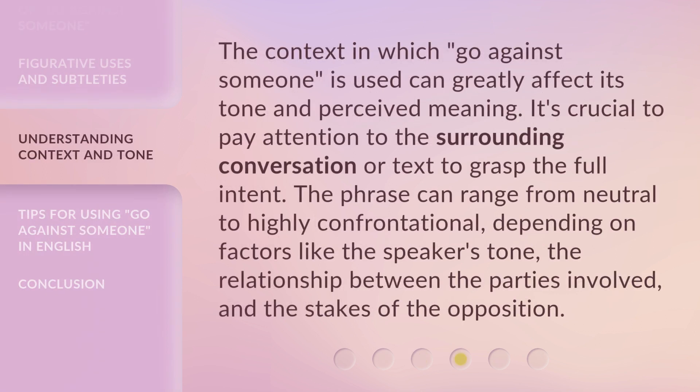The context in which 'go against someone' is used can greatly affect its tone and perceived meaning. It's crucial to pay attention to the surrounding conversation or text to grasp the full intent. The phrase can range from neutral to highly confrontational, depending on factors like the speaker's tone, the relationship between the parties involved, and the stakes of the opposition.